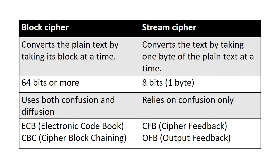Most pre-WWII ciphers, the German Enigma, Linear Feedback Shift Register, RC4, and Rivest's RC4 algorithm are examples of stream cipher.